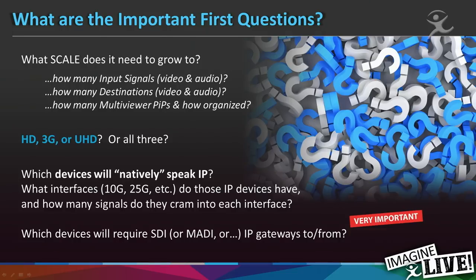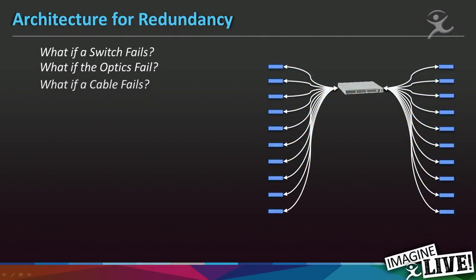A little bit about design considerations. When you're designing a system, you have to think through how big it's going to get. Are you planning for UHD? Are you planning for everything being 3 gig or not? How you answer those questions radically affects how you design your system. The second question is which devices in the network natively speak IP, because you need gateways for the rest — if they speak SDI, you have to convert them. There's no right answer; you just have to know.